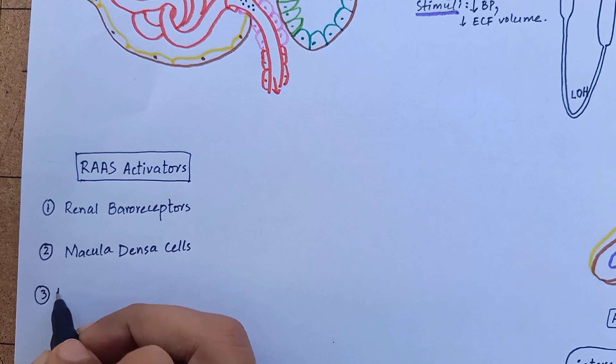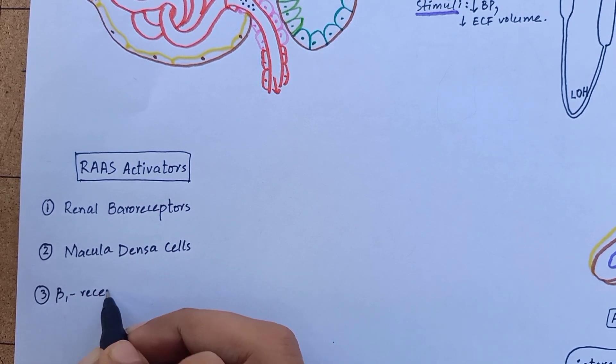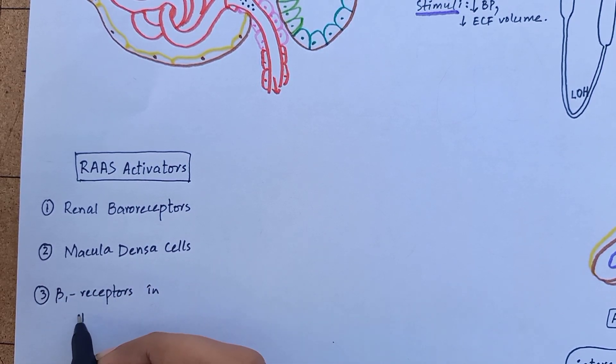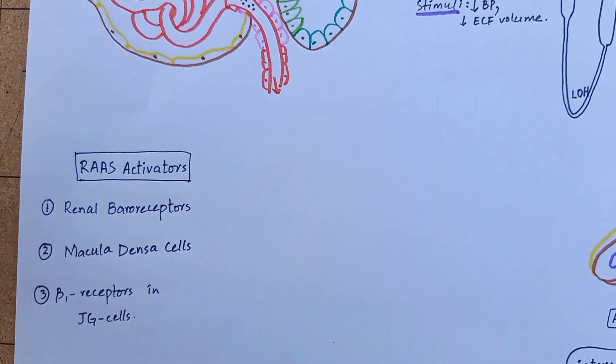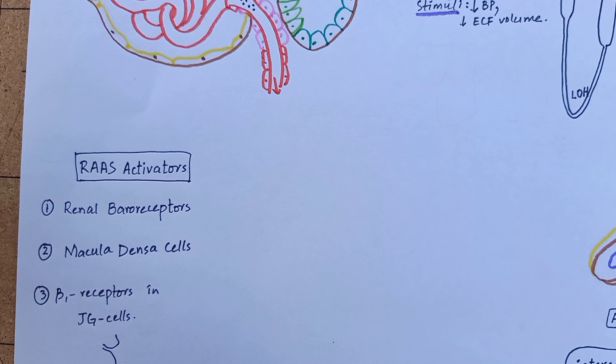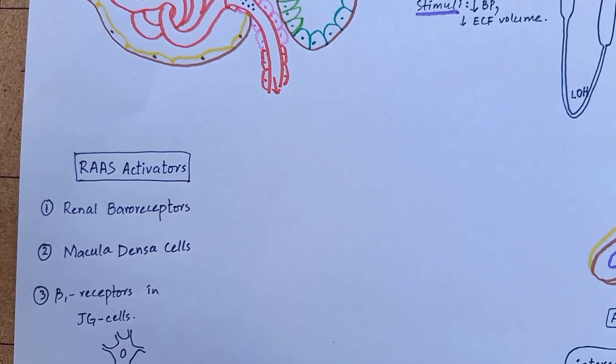The third mechanism is by beta-1 receptors. As during the period of sympathetic activity, fight or flight, there is high blood pressure. That high blood pressure is simply because of renin release as a result of sympathetic stimulation.